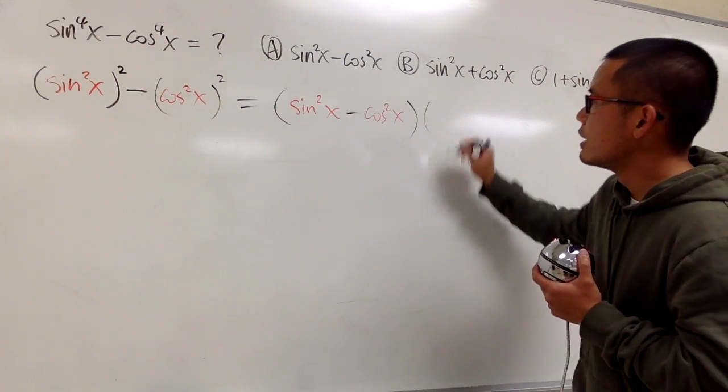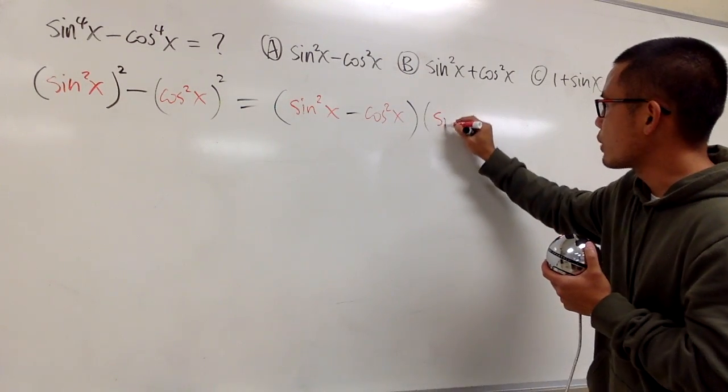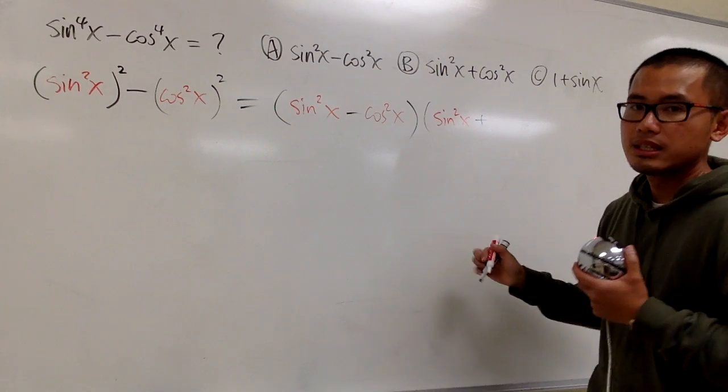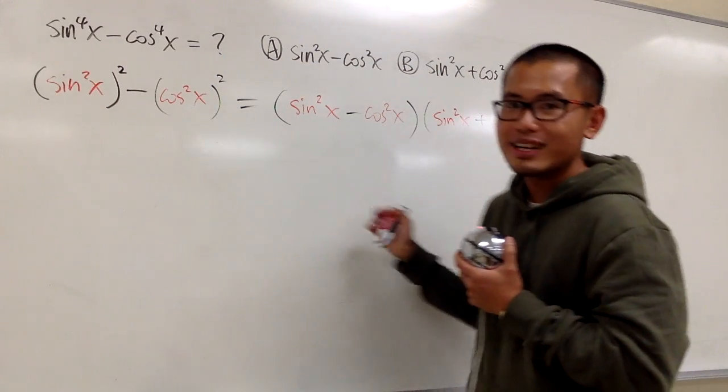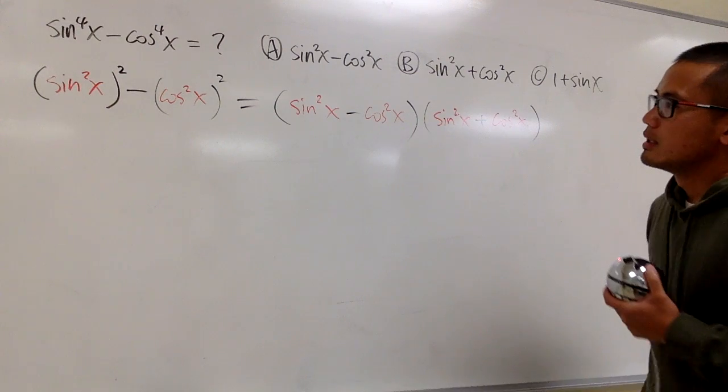And then we have the second part, a plus b. a is sine square x, so let's put that down right here. And then we add it with the b, which is cosine square x. So, right here, cosine square x. So, we factor this out, but what can we do next?